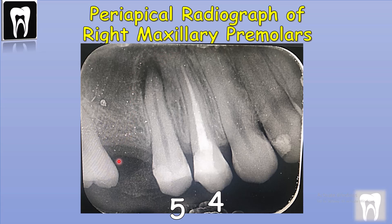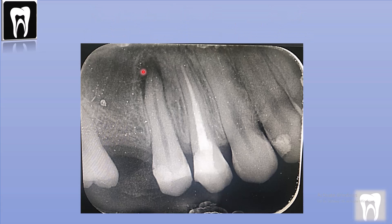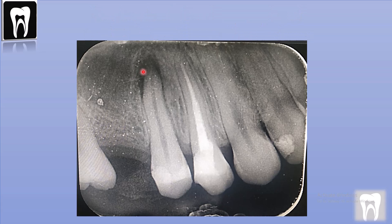Something that is not normal in this radiograph is this periapical radiolucency in the apex of the second premolar. So how did this happen?